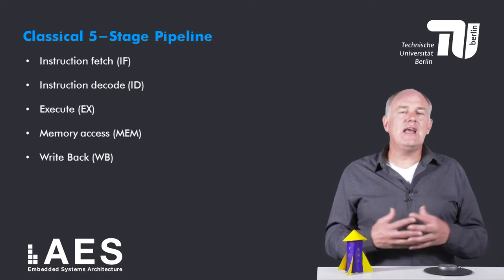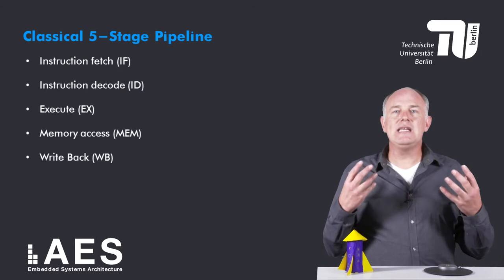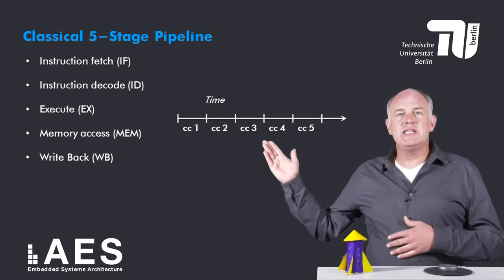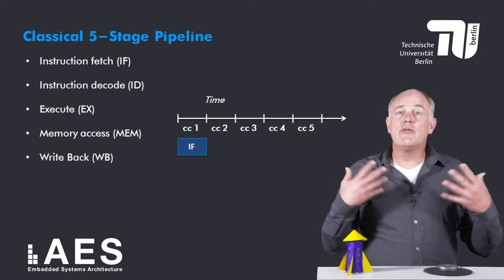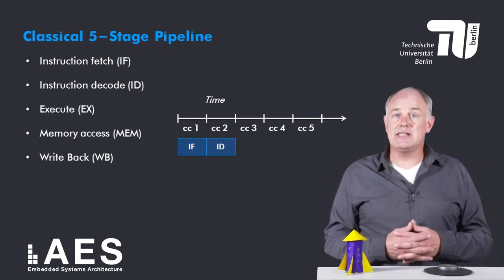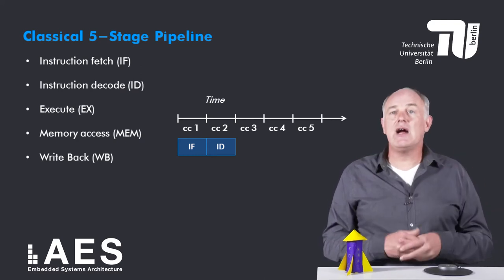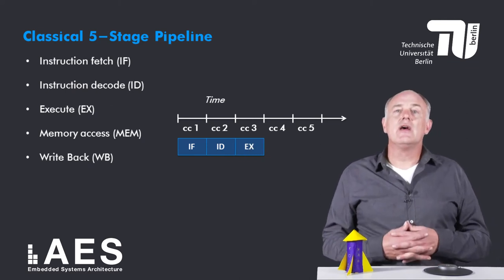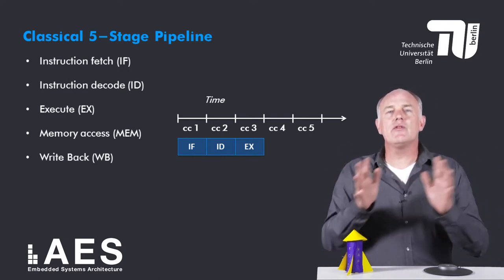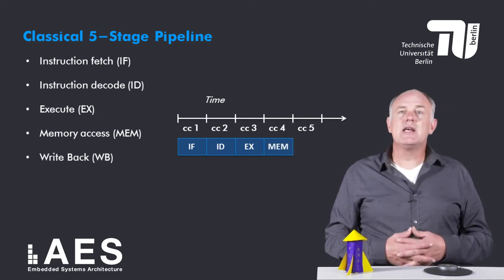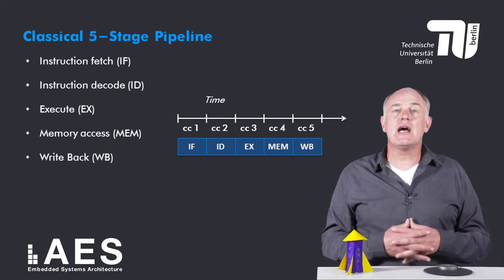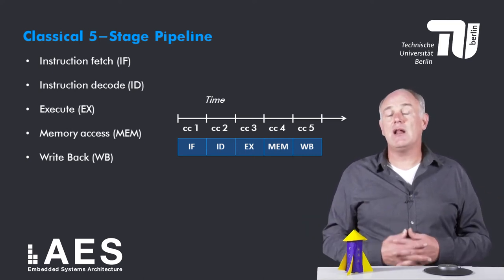Now that we know the five stages in the classic canonical pipeline, let's see how each individual instruction is executed. Here's time divided into clock cycles CC1, CC2, etc. In the first clock cycle the instruction is fetched. In the second it is decoded and the register file is also read. In the third stage the instruction is executed. In the fourth stage the memory access takes place in case the instruction is a load or a store. And finally in the fifth clock cycle the result of the instruction is written back to the register file if needed.